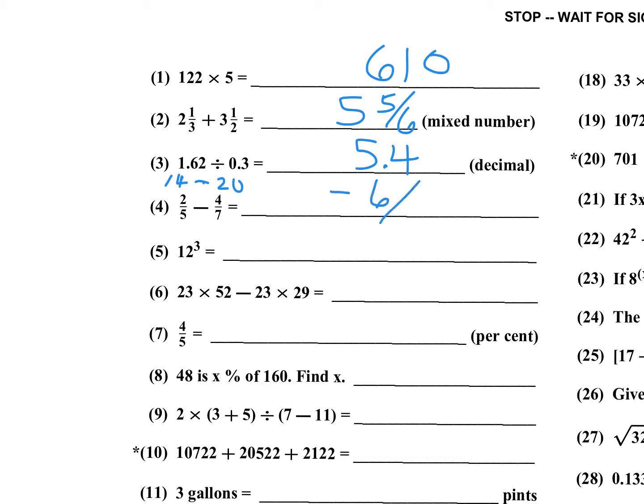Then I multiply 5 times 7, which is 35. Note: I'm writing these numbers only for explanation — you can only write down the answers. So number 4's answer is negative 6 over 35. Number 5 is 12 cubed, which is 1728. You should memorize the first 12 cubes.